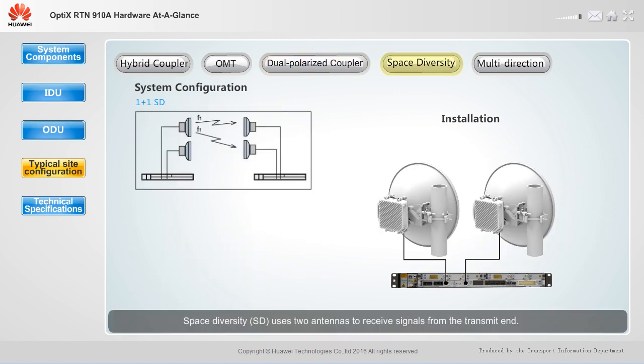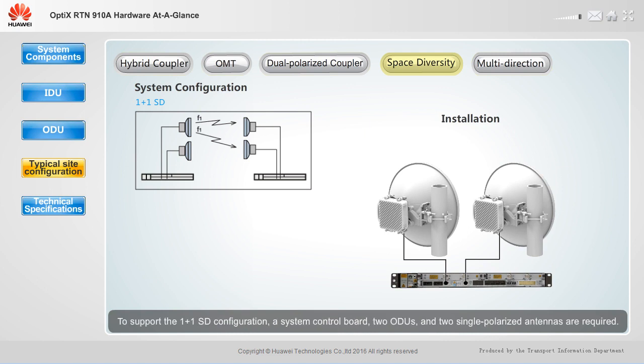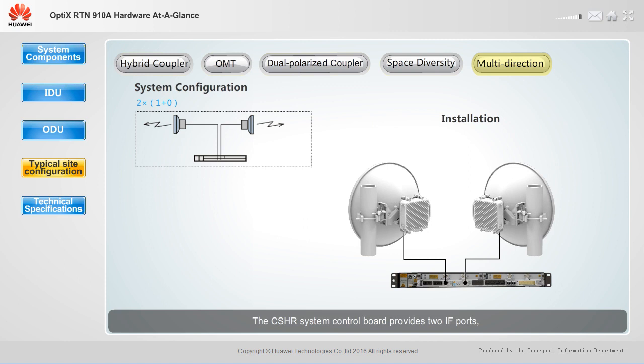Space Diversity (SD) uses two antennas to receive signals from the transmit end. If the distance between the two antennas is much greater than the wavelength, the received signals are considered independent of each other. To support the 1+1 SD configuration, a system control board, 2 ODUs, and 2 single polarized antennas are required. The CSHR system control board provides 2 IF ports, which can be used with 2 ODUs and 2 single polarized antennas to achieve 2×(1+0) configurations.